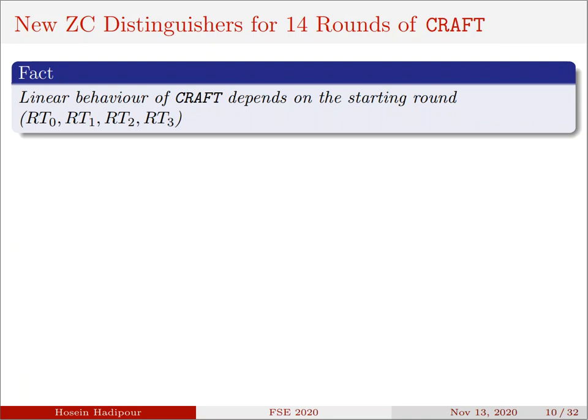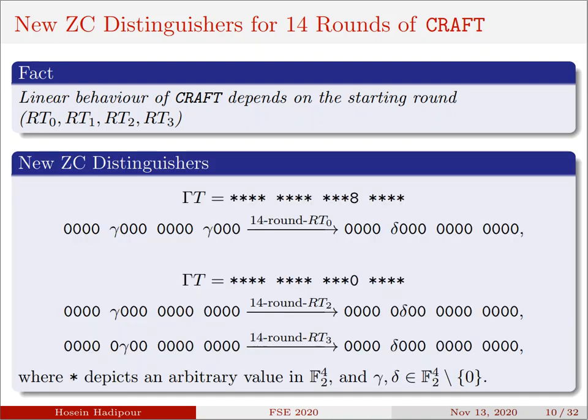It should be noted that the linear behavior of CRAFT depends on the starting round. Given that four different tweakeys are used in CRAFT, it is enough to investigate four possible cases, which are denoted by RT0, RT1, RT2, and RT3 here. RT0 denotes the case in which the distinguisher begins from where TK0 is used. RT1, RT2, and RT3 are defined in the same way.